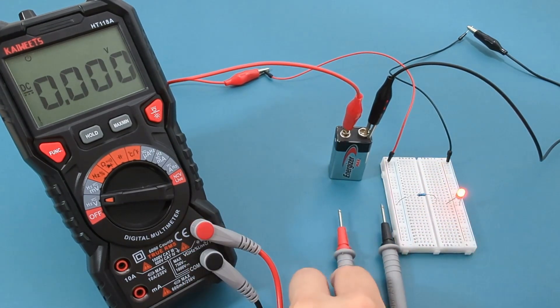By the time the current has passed through both the resistor and the LED, the total voltage drop adds up to the initial voltage supplied by the battery, which is 9 volts.